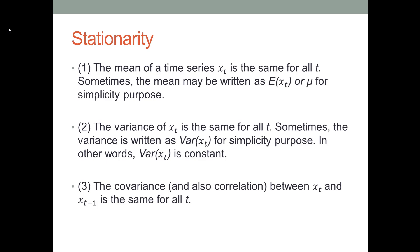The stationary assumption has three components. First, we assume that a time series dataset has a constant mean. Sometimes, the mean of a time series will be written as E(x_t) or μ for simplicity purpose. So we assume that a time series dataset has a constant μ.